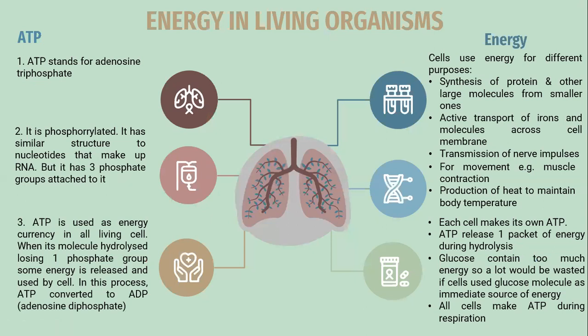Energy in the living organism. ATP stands for adenosine triphosphate. It is phosphorylated and has a similar structure to nucleotides that make up RNA, but it has three phosphate groups attached to it. ATP is used as energy currency in all living cells. When its molecule hydrolyzes, losing one phosphate group, some energy is released and used by cells. In this process, adenosine triphosphate is converted to adenosine diphosphate.